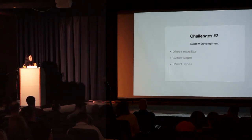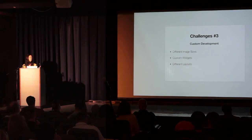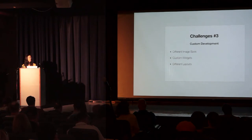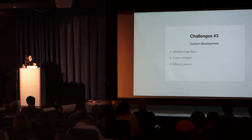That leads to challenge number three: custom development. The blog name mapping function also serves an SEO purpose — it makes more sense to have a meaningful class name like 'slice-tv' rather than just a number like 'eight'. The subdomain blogs had very different page designs and required different image sizes. There were custom widgets needed for all blogs and some specific to certain blogs, plus different layouts as shown in the screenshots.